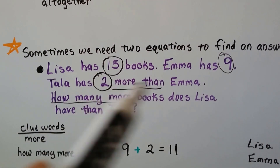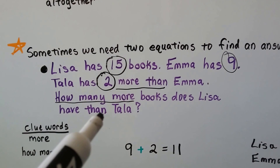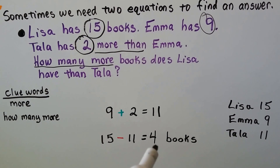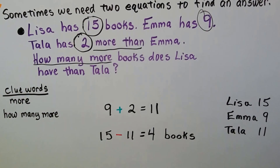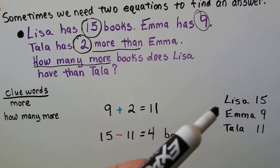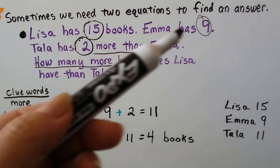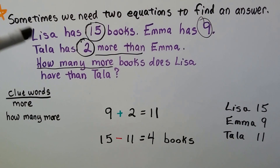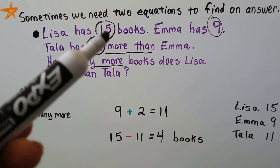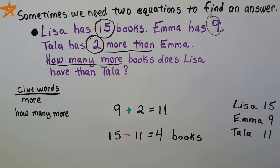So Tala has 11 — that's 2 more than 9. Now that we know Tala has 11, we can figure out how many more books Lisa has than Tala, because Lisa has 15 and Tala has 11. So we do 15 minus 11: counting up gives us 4. Lisa has 4 more books than Tala. We needed two equations — solving for Tala's count first, then using that in the subtraction sentence — and we labeled our answer as books.